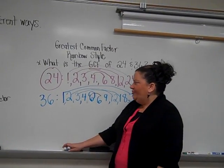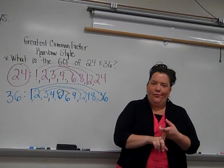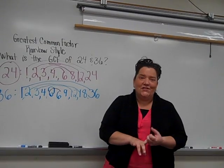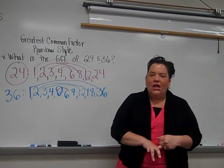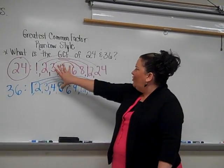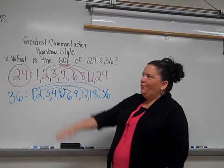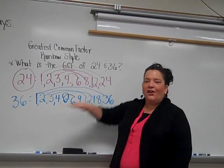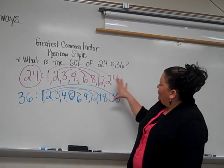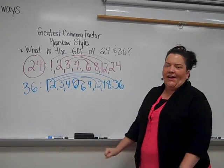We're halfway there. We have all the factors listed for 24, and we have all the factors listed for 36. When we're looking for the greatest common factor, we're looking for the largest number that is both in our 24 rainbow and our 36 rainbow. What is the greatest number that is in both sets of factor pairs?